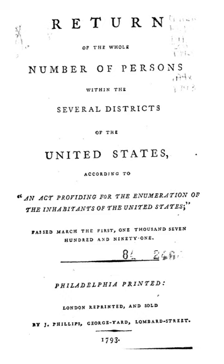The 1790 United States Census was the first census in the history of the United States. The population was recorded as 3,929,214 as of Census Day, August 2, 1790, as mandated by Article I, Section II of the United States Constitution. The law required that every household be visited, that completed census schedules be posted in two of the most public places within each jurisdiction, and that the aggregate amount of each description of persons for every district be transmitted to the president. U.S. Marshals were responsible for governing the census.